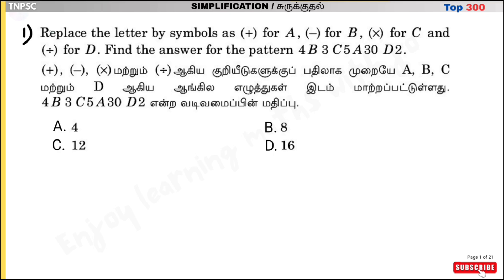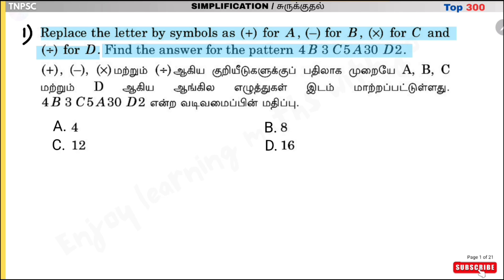Question number 1. Replace the letter by symbols: plus = a, minus = b, multiply = c, and division = d. Find the answer for the pattern: 4b, 3c, 5a, 30, d2. That means plus, minus, multiply and division.